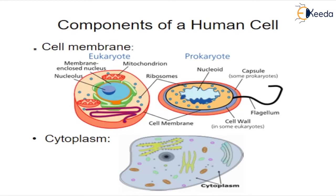Let us see their location and functions. The first one is cell membrane. A thin layer of protein and fat that surrounds the cell is the cell membrane. It is semi-permeable, allowing some substances to pass into the cell and blocking others.